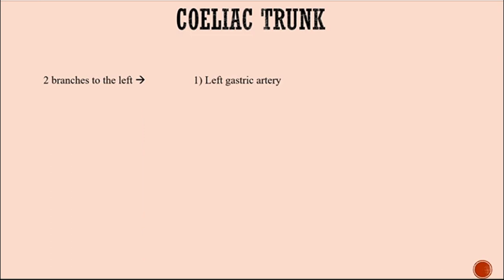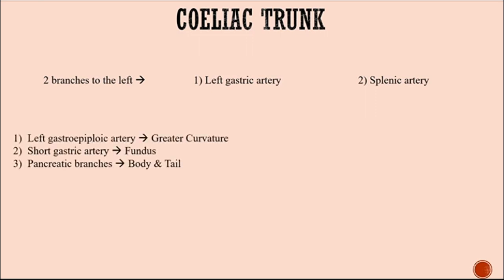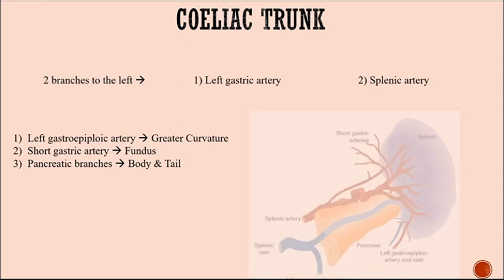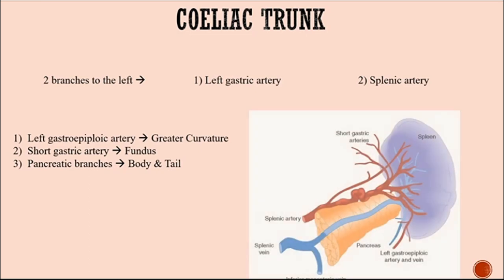The second branch is the splenic artery. It gives terminal branches: the first one is the left gastroepiploic artery which supplies the greater curvature of the stomach, then the short gastric artery supplying the fundus of the stomach, and then the pancreatic branches supplying the body and the tail of the pancreas.